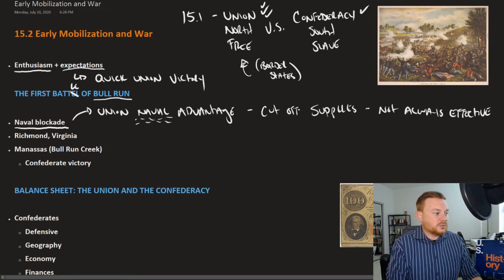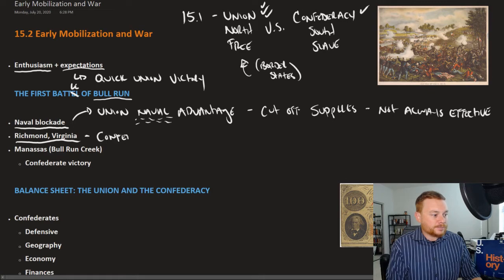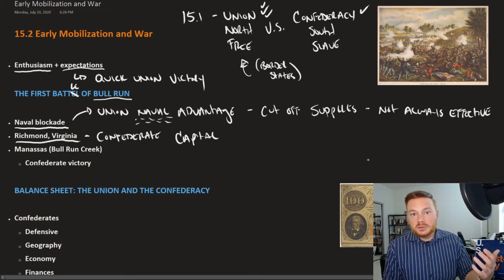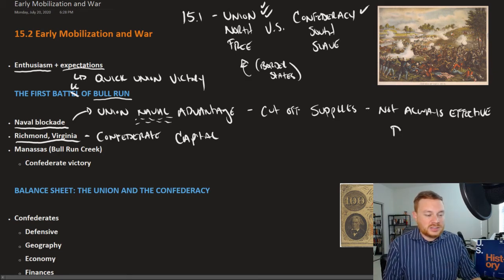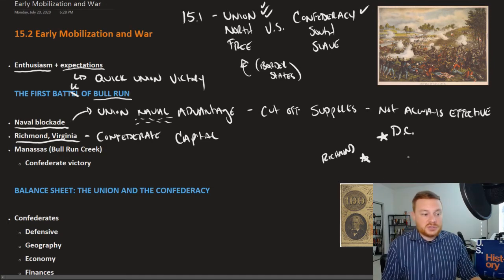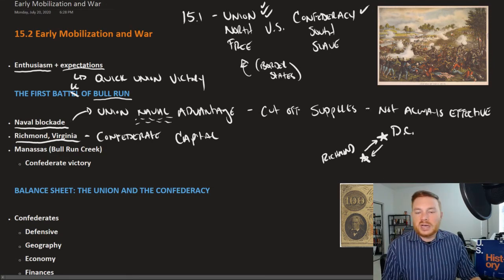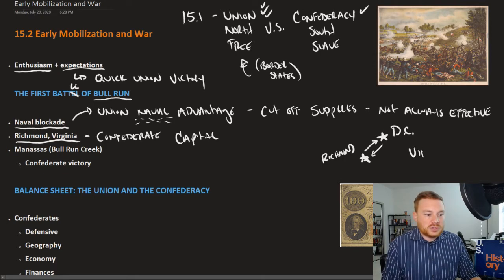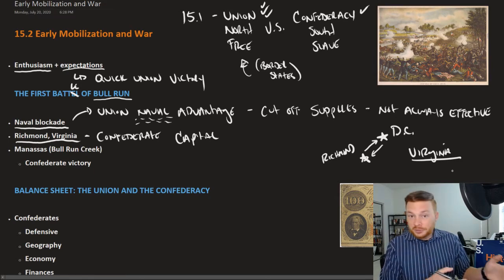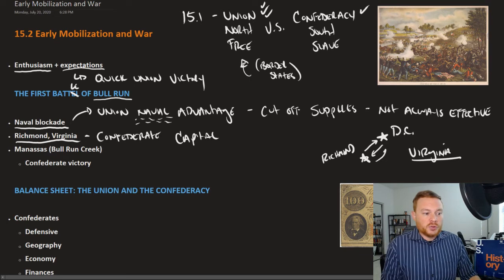The Confederacy placed their capital city at Richmond, Virginia. The capital of the United States is Washington, D.C. Right there in Virginia, you had both capitals in close proximity, and much of the battles that took place during the Civil War happened between these two capital cities. Most of the major battles — where the war would be fought and won or lost — took place in Virginia, driven by efforts to capture each other's capital city.